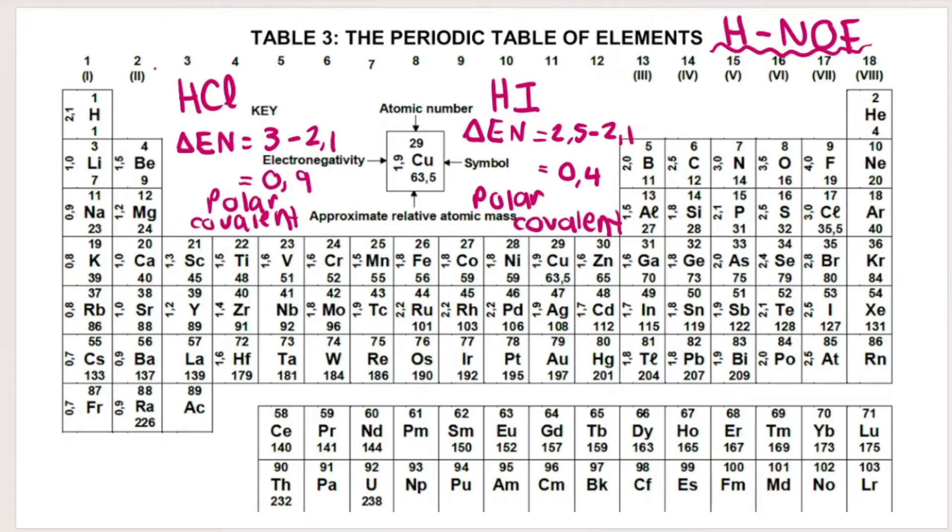So I call it HNOF. This is a hydrogen and a chlorine. This is a hydrogen and an iodine. So neither of these molecules will have hydrogen bonding between their molecules. Because they're both polar covalent, they will be dipoles.